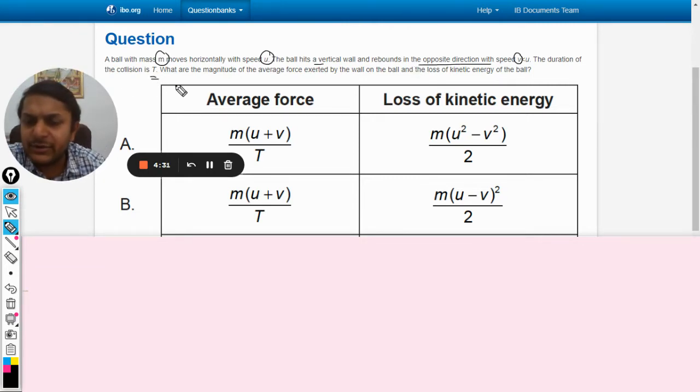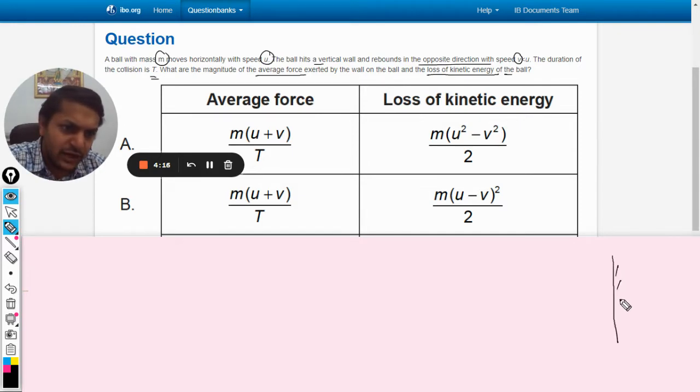The duration of the collision is capital T. What are the magnitude of average force exerted by the wall on the ball and the loss of kinetic energy of the ball? So this is the wall, and this is the ball that is moving here with speed u.